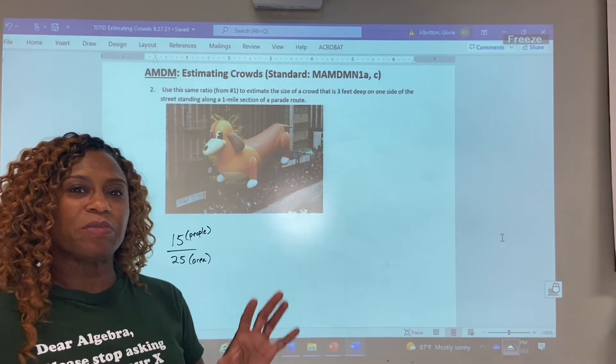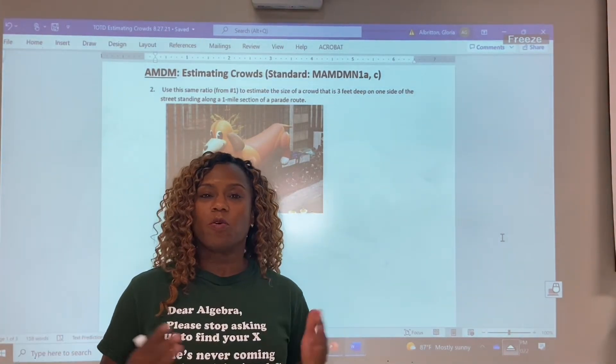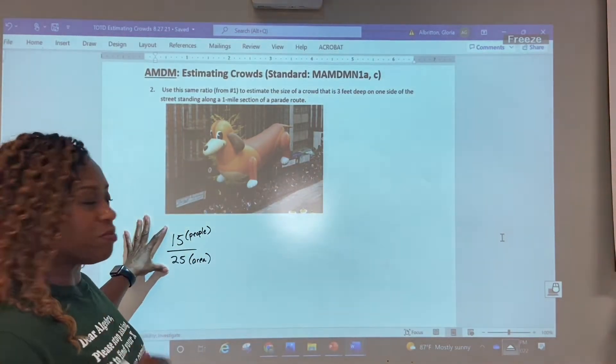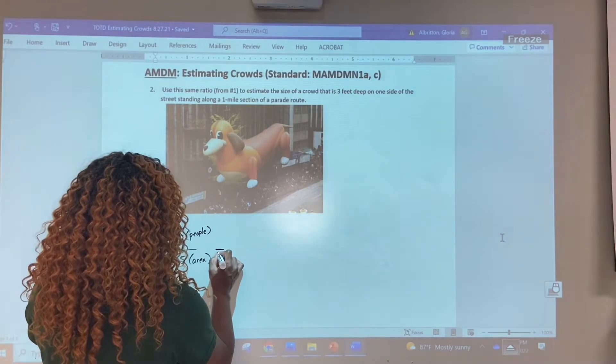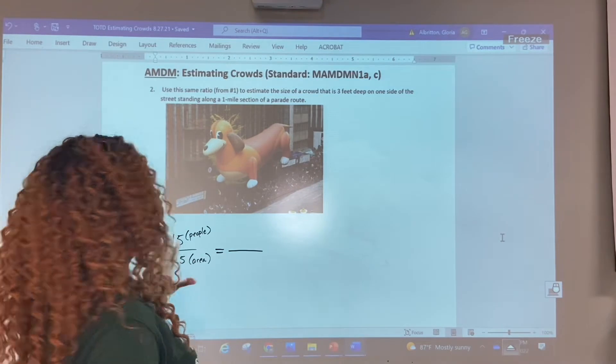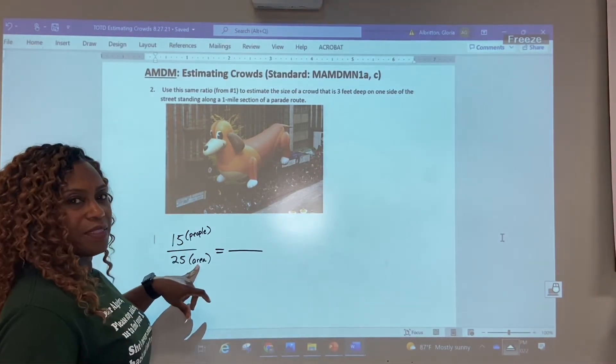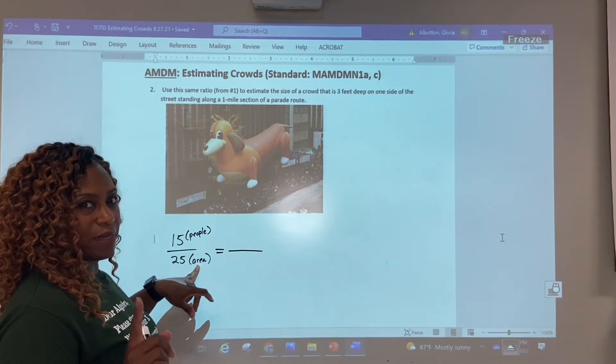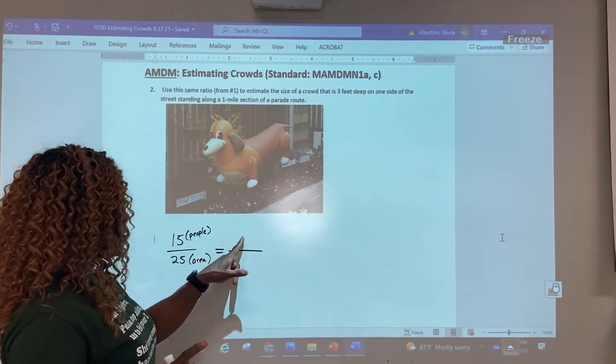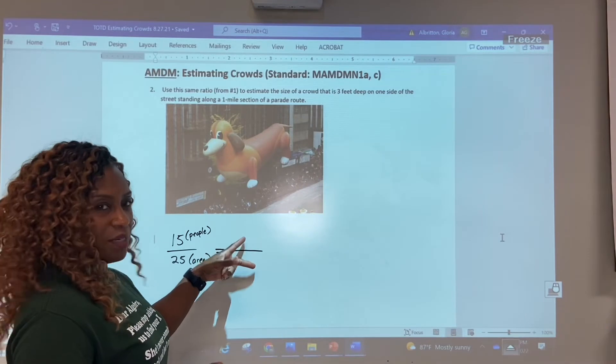Now remember when we're doing these estimating crowd problems, what we're doing is setting up a proportion. A proportion consists of two ratios that are set equal to each other. We're given the first ratio from problem number one, so we are going to set up the second one based on the problem. Keep in mind the reason why I wrote people in parentheses over area here is to help us stay consistent with our second ratio. If you've got people over area for your first ratio, you have to stay consistent people over area for your second. So let's go ahead and figure out what this ratio is going to look like.